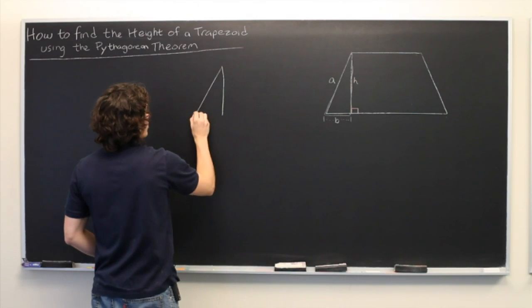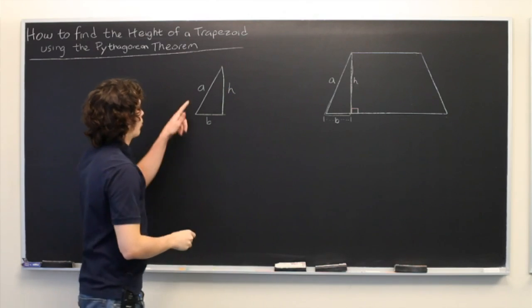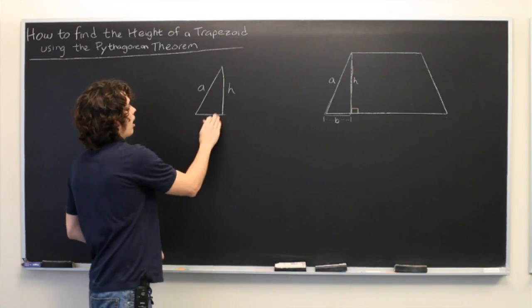So, we draw the triangle over here. We have A, B, and H, where A is the hypotenuse and B and H are legs.